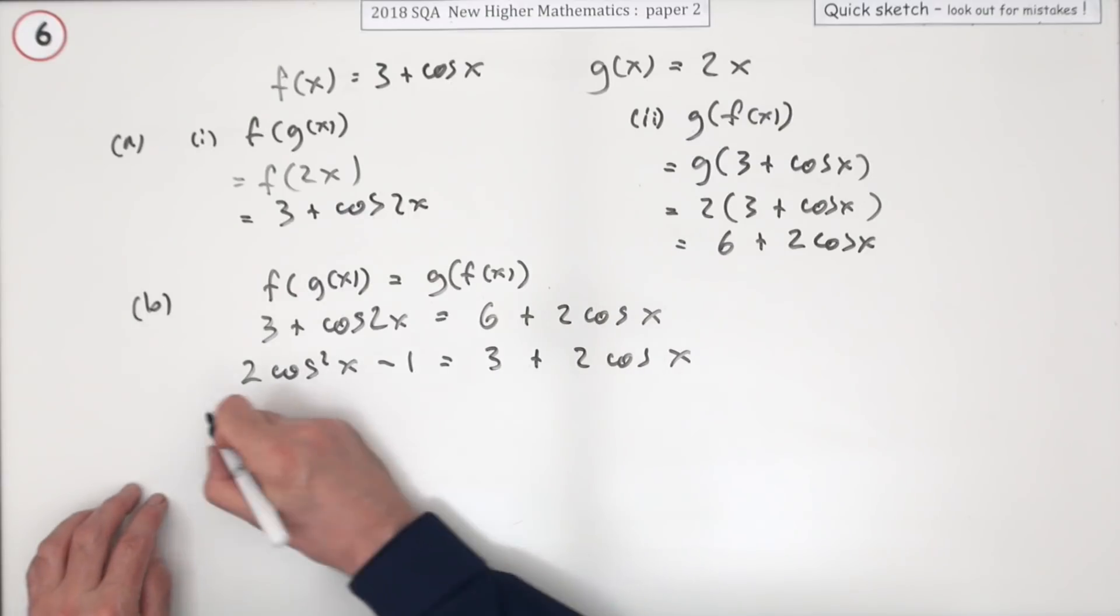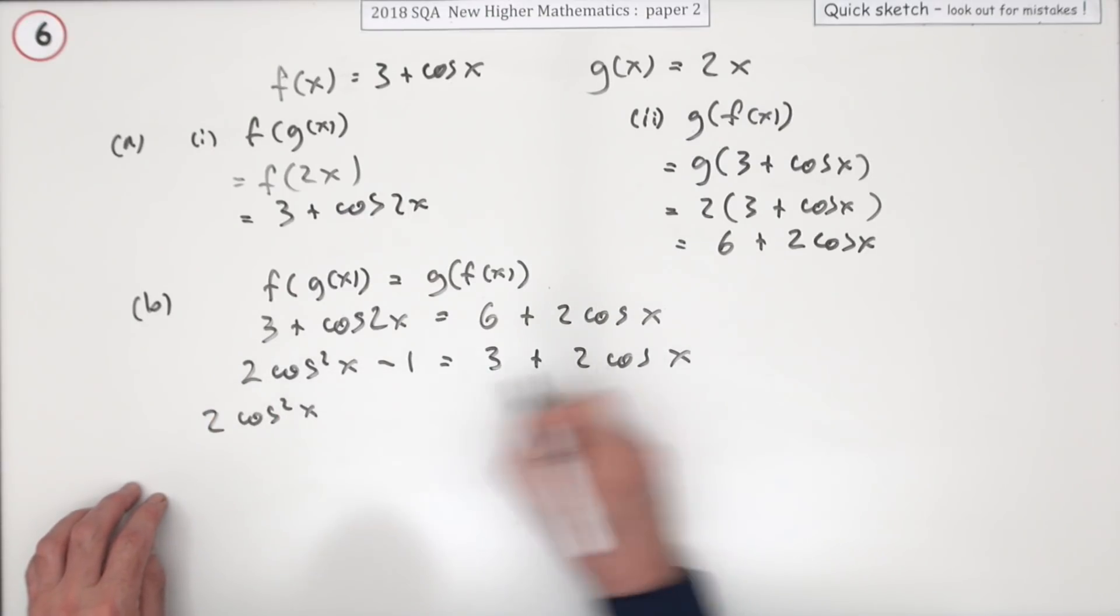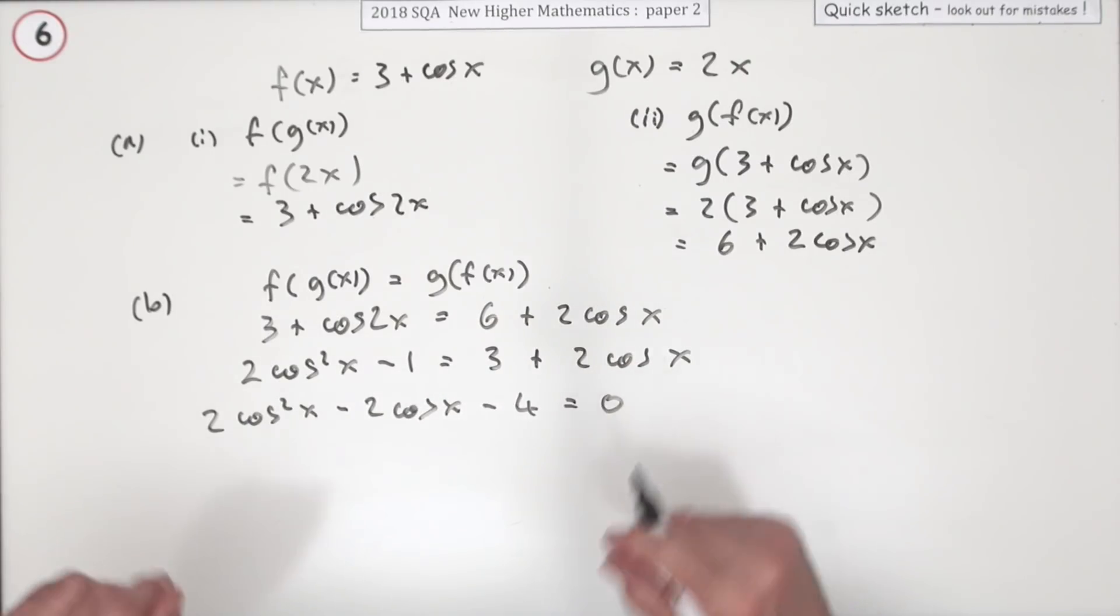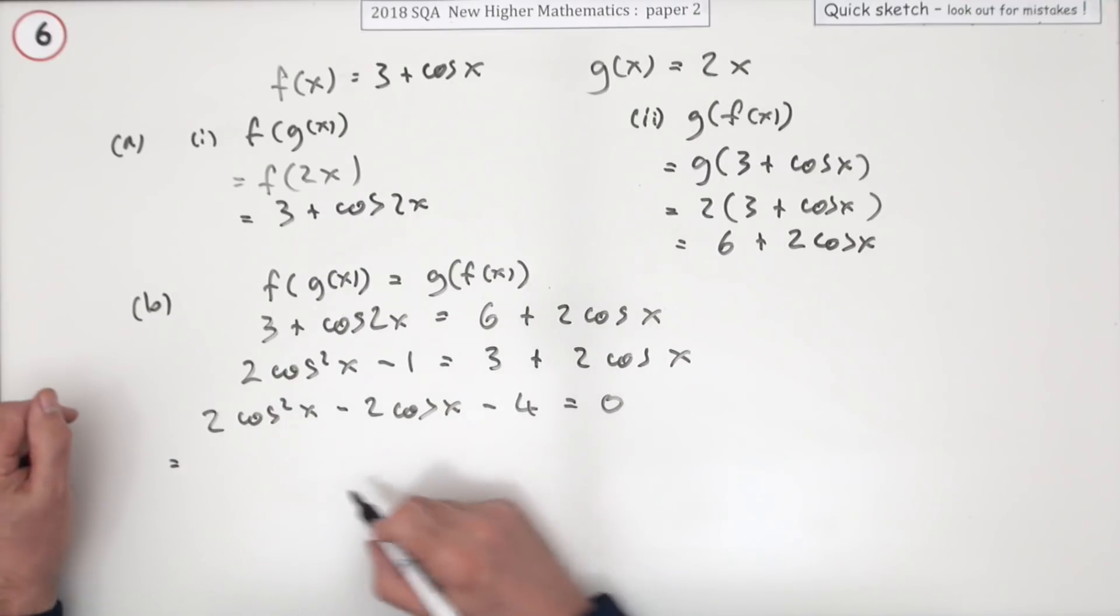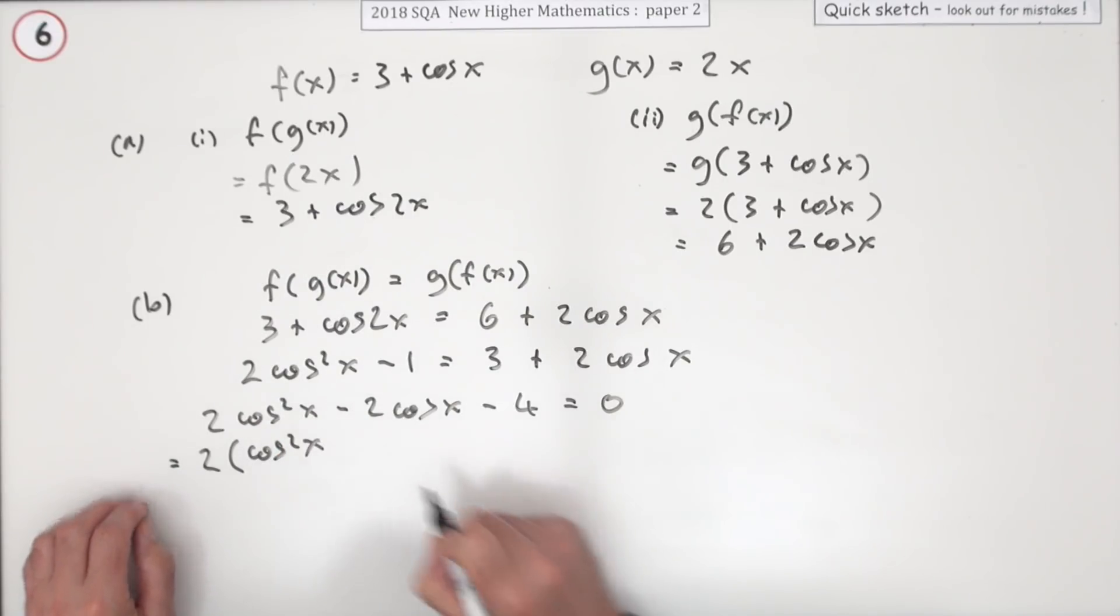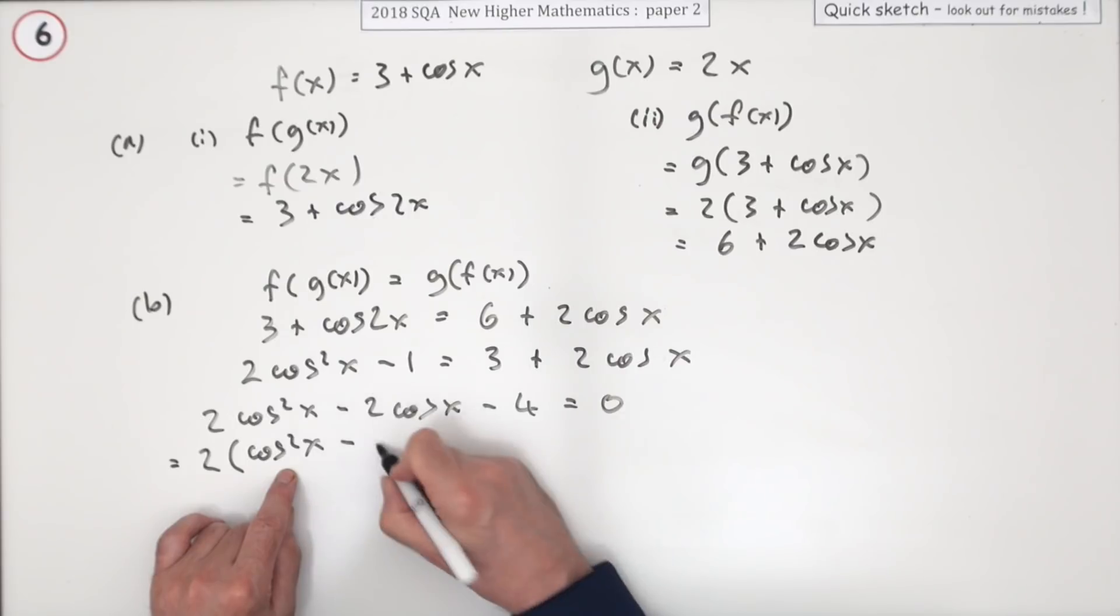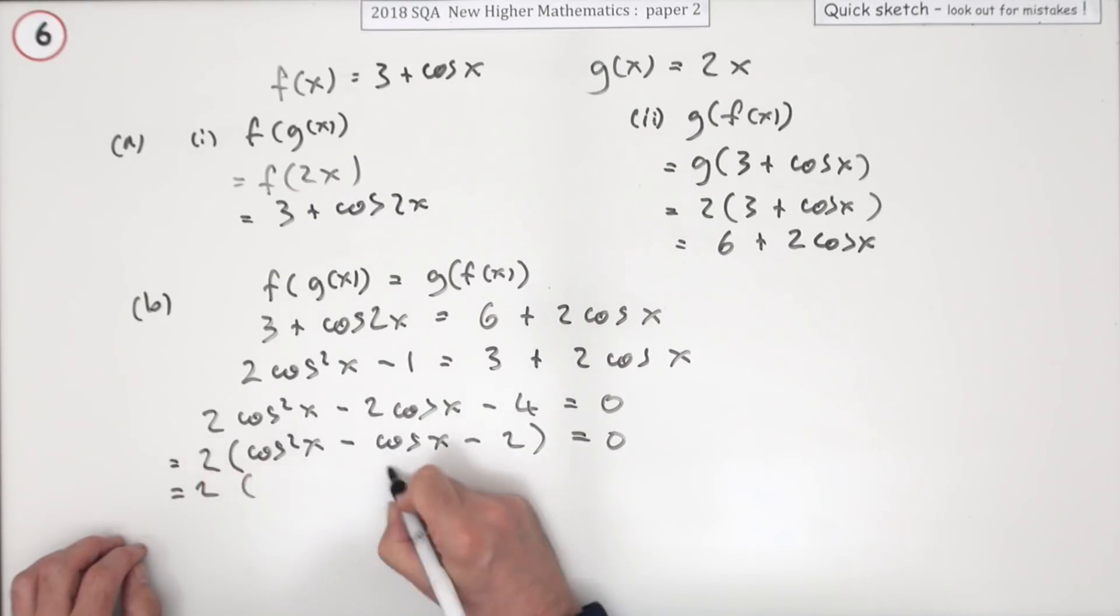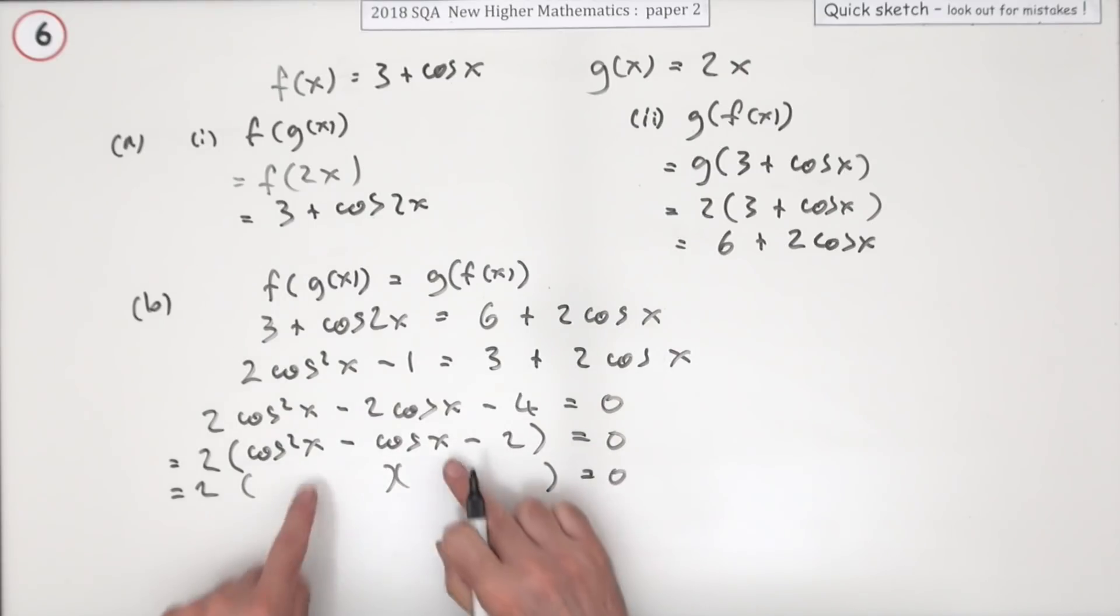A quadratic, bring it all over to one side: 2 cos² x minus 2 cos x minus 4 equals zero. Now solve it—factorize it. There's a common factor of 2, which plays no part but I'll leave it in: 2(cos² x minus cos x minus 2) equals zero.